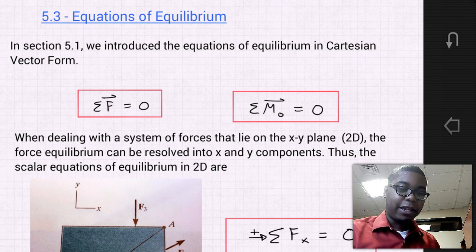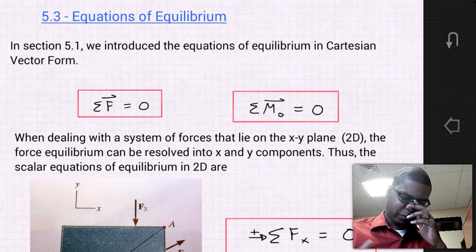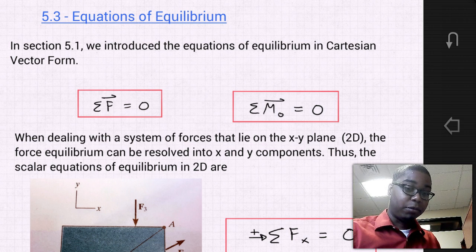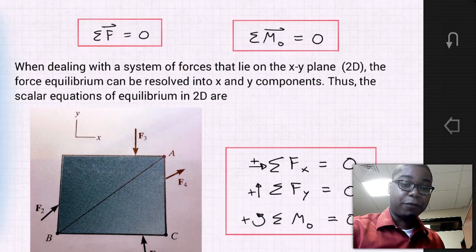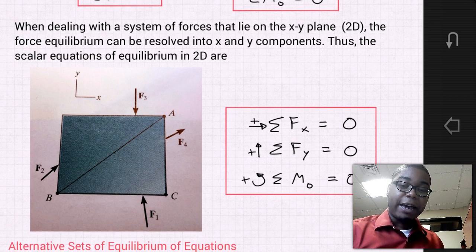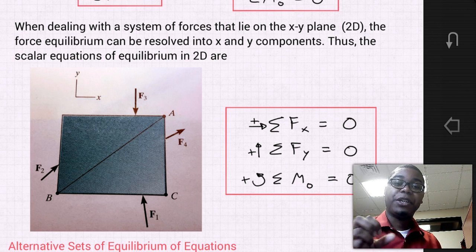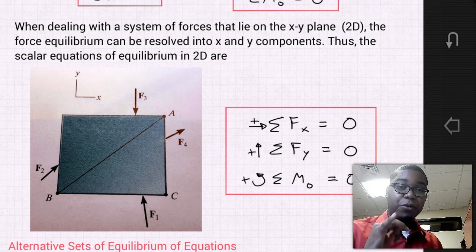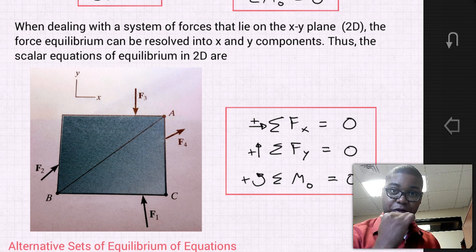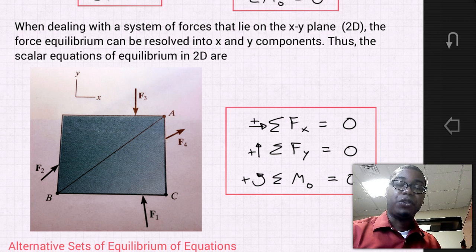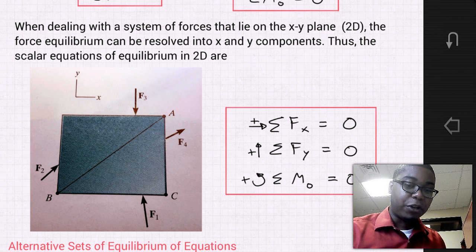Thus, the scalar equations of equilibrium for 2D problems are as follows: the sum of the forces in the x direction is equal to zero, the sum of the forces in the y direction is equal to zero, and the sum of the moments, which is out of the page, are equal to zero.